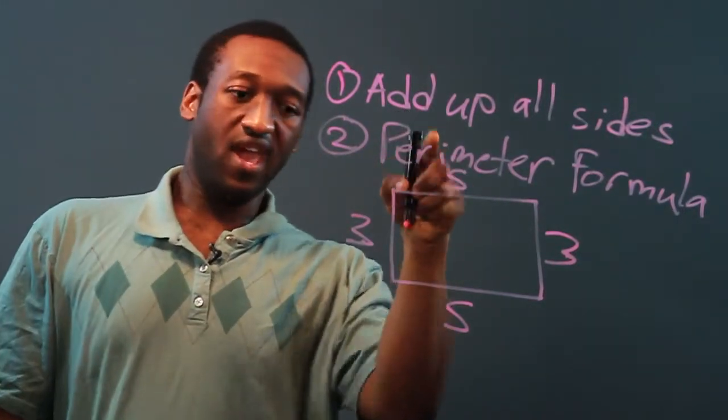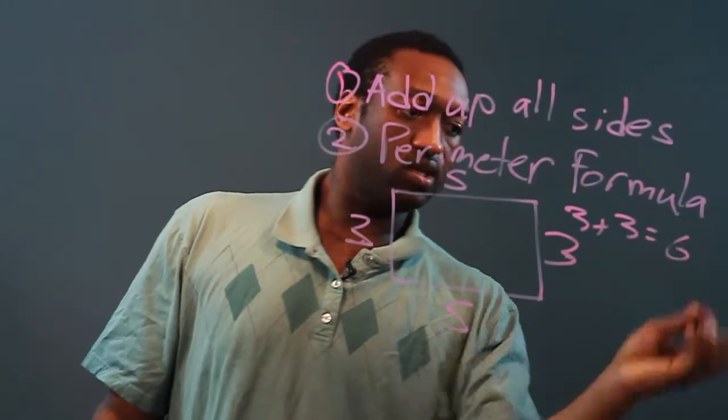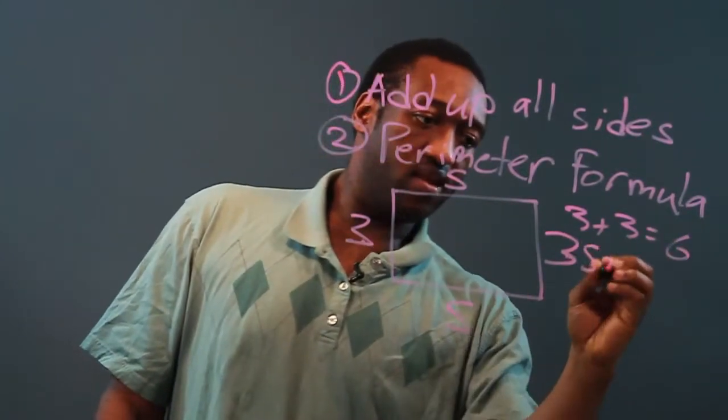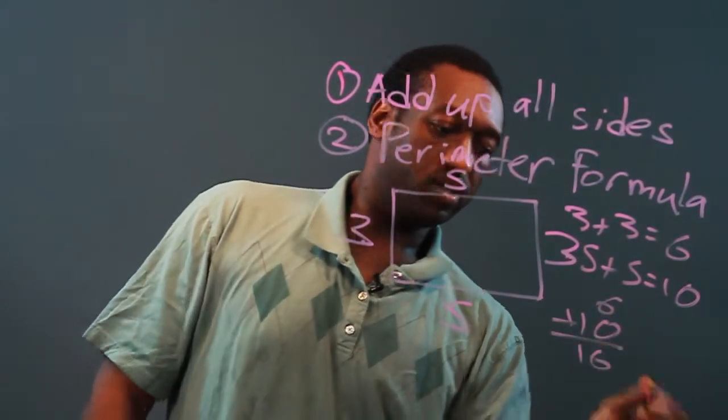Let's use the first way and add up all the sides. Three plus three is six. Five plus five is ten. And six plus ten would be sixteen.